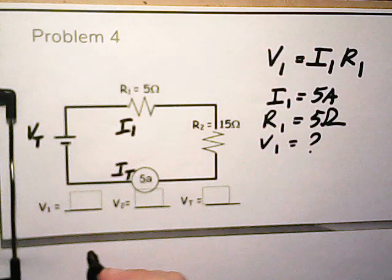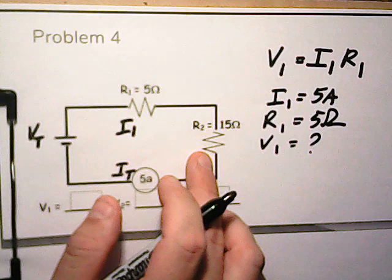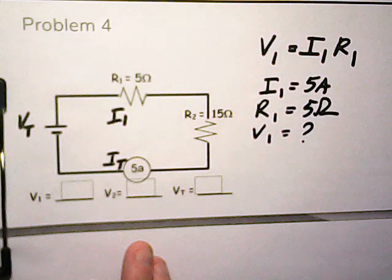This is our total voltage. We don't know what the voltage is across the battery, but what we do know is that all the voltages add. So the voltage for one plus the voltage for two would give us the total.